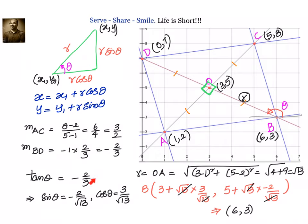With tanθ = -2/3 (negative slope), as you move in the positive x direction, y decreases. So sinθ = -2/√13 and cosθ = 3/√13. The distance r = OA = √13. Substituting into the formula x = x1 + r·cosθ and y = y1 + r·sinθ gives coordinates of B as (6, 3). Using the midpoint theorem, the opposite vertex D is (0, 7).